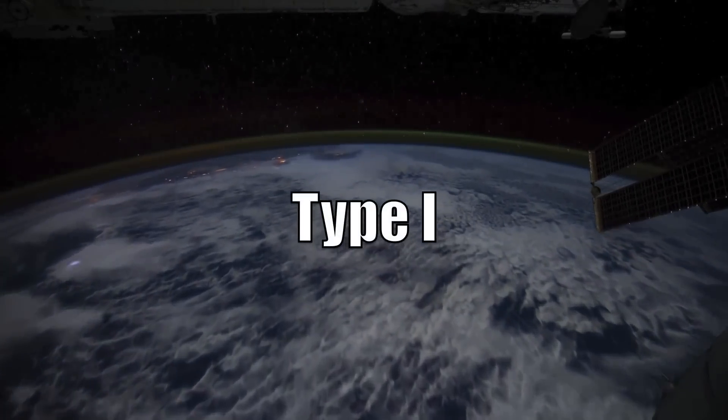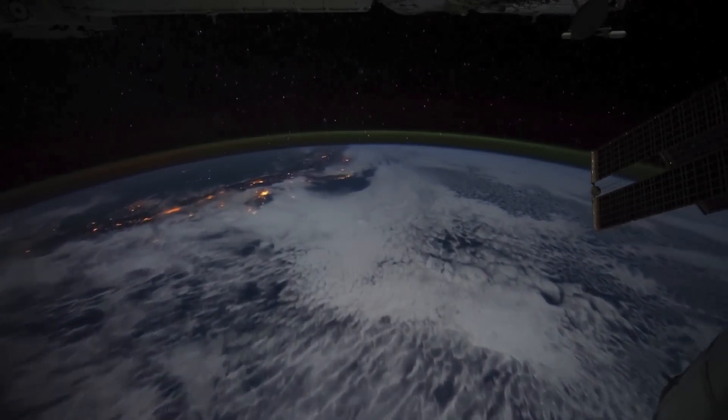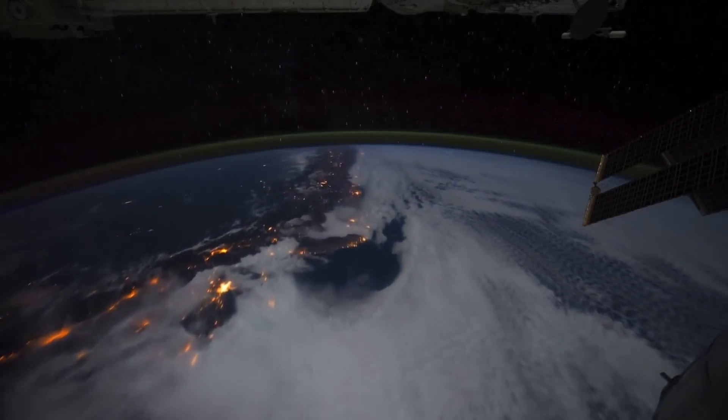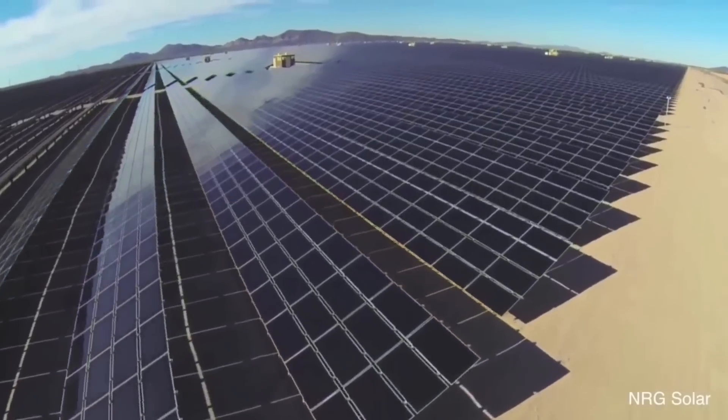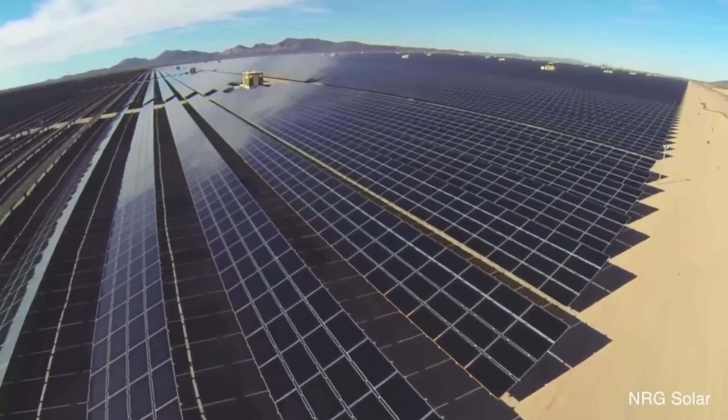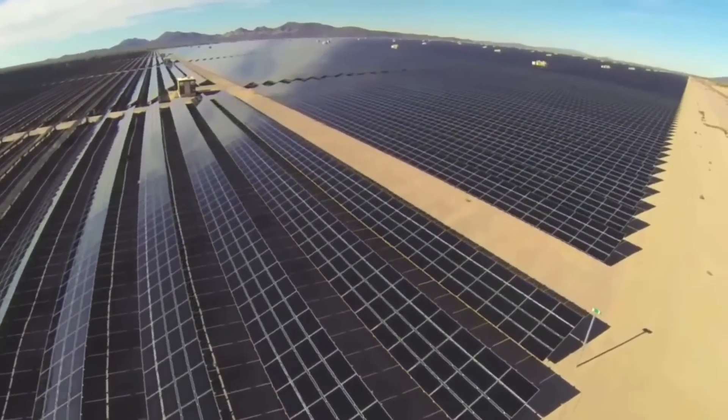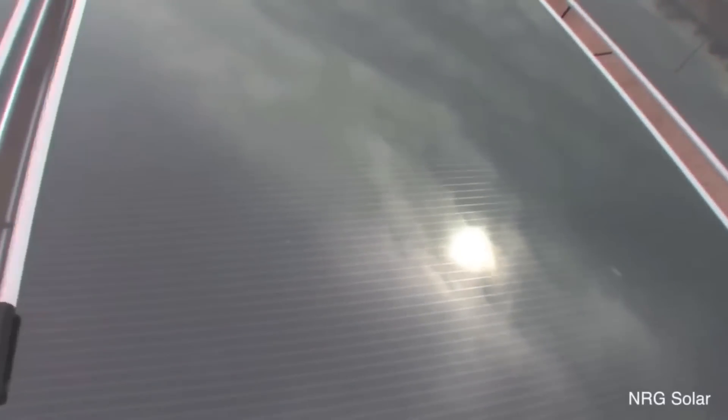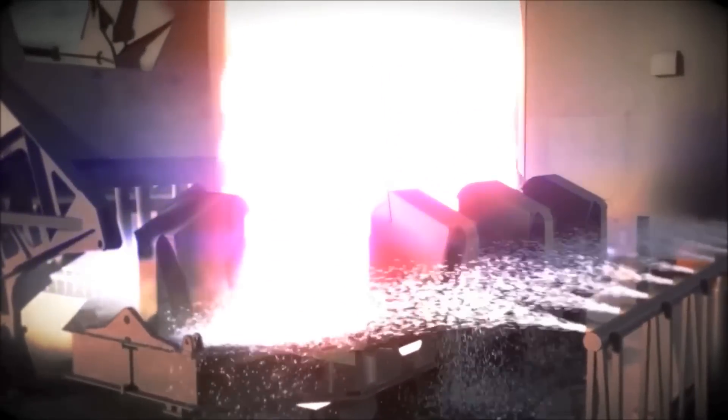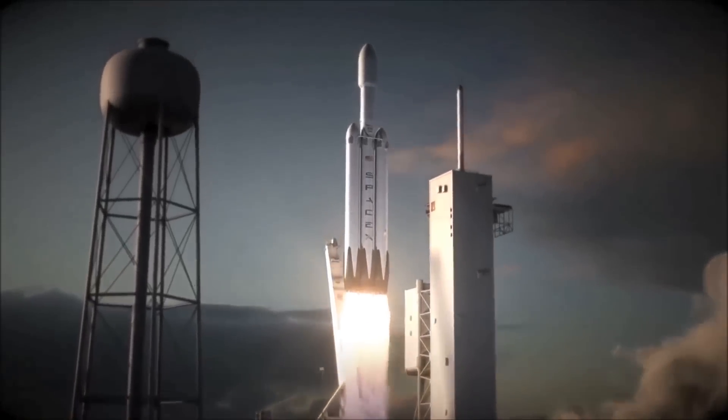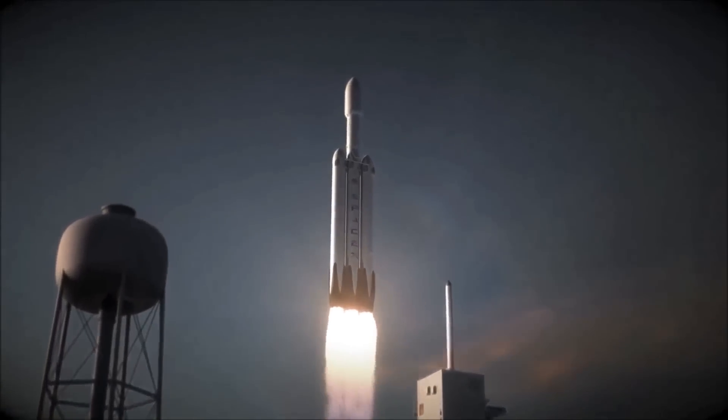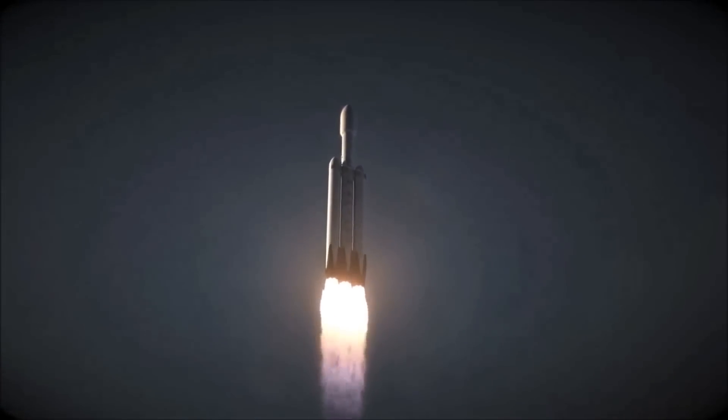Type 1: A civilization that is capable of harnessing the total energy of its home planet. This is where we're heading. The good part would be that we'd achieve an ultimate peak. The bad part is that we'd have soon more energy demand than supply, because evolution can't be so easily halted. We'd have to leave Earth and start pumping our planet for their worth, or even milk our own star directly for its power.